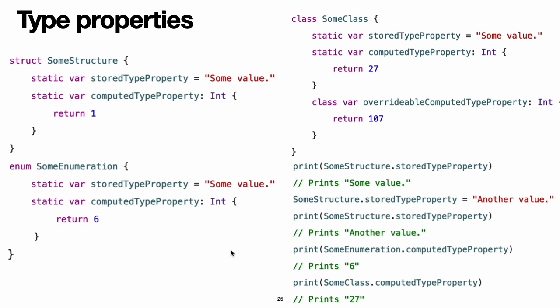Type property syntax: in C and Objective-C, you define static constants and variables associated with the type as global static variables. In Swift, however, type properties are written as part of the type's definition within the type's outer curly braces, and each type property is explicitly scoped to the type it supports. You define type properties with the static keyword. For computed type properties for class types, you can use the class keyword instead to allow subclasses to override the superclass's implementation. This example shows the syntax for stored and computed type properties. Note, the computed type property examples here are for read-only computed type properties, but you can also define read-write computed type properties with the same syntax as for computed instance properties.